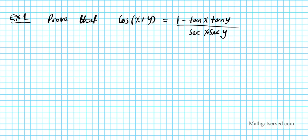On the left side, I have cosine of x plus y. I'm going to apply the sum identity for cosine. Remember for cosine: you keep the trig functions the same and switch the sign. So cosine of x plus y becomes cosine x cosine y minus sine x sine y. On the right side, I'm going to write everything in terms of sine and cosine.